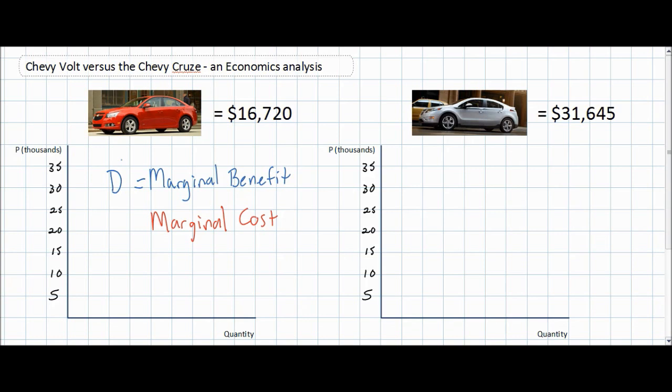the incomes of consumers, the number of consumers, and so on. Even special circumstances can determine the marginal benefit or the demand for a product.